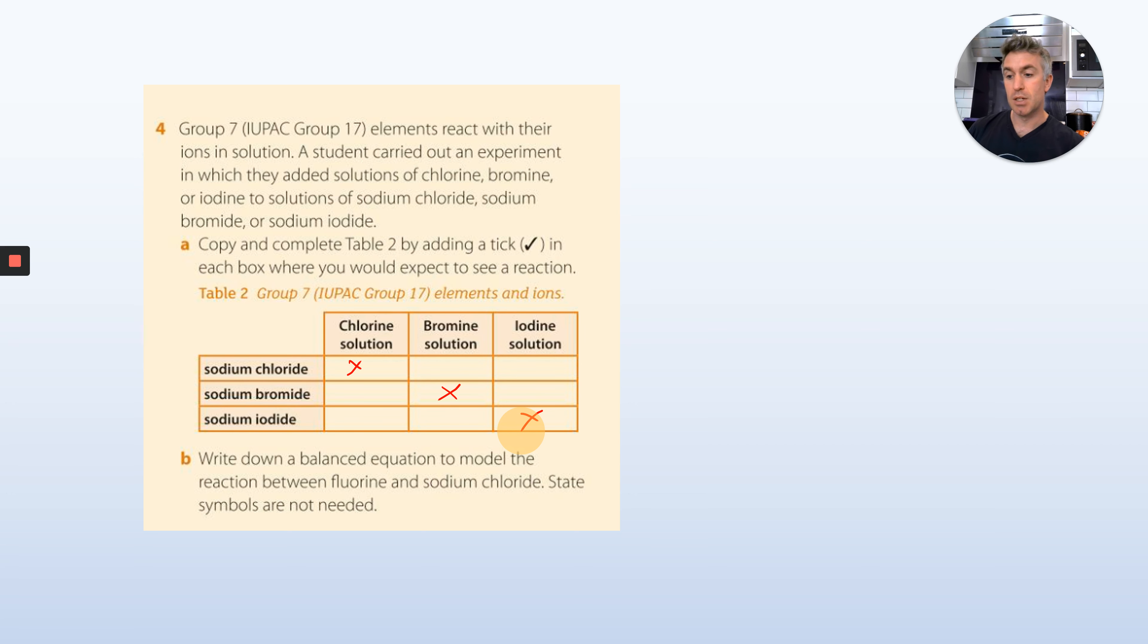Then write down a balanced equation to model the reaction between fluorine and sodium chloride. State symbols are not needed. I would start by doing the word equation. Then you say fluorine plus sodium chloride arrow, what happens? There is a reaction, something does happen, there is a change, there is a displacement. So what happens? And then can you convert that into symbols?